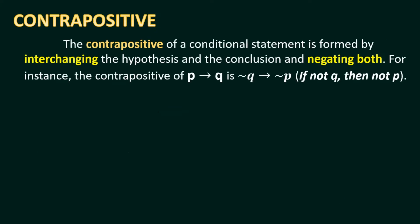For the contrapositive, the contrapositive of a conditional statement is formed by interchanging the hypothesis and the conclusion AND negating both. So unlike the inverse which only negates, the contrapositive also interchanges. For instance, the contrapositive of P implies Q is not Q implies not P: 'If not Q, then not P.' That is why the positions are interchanged.